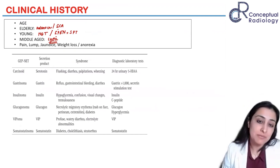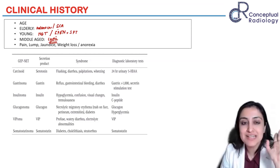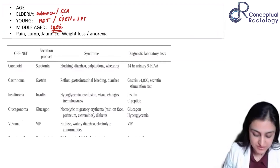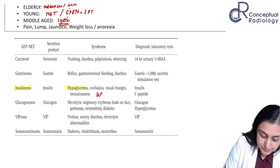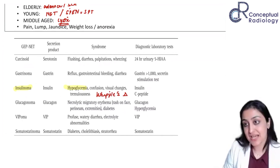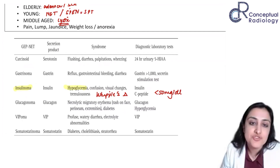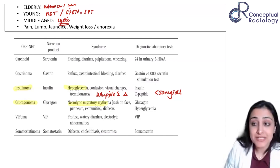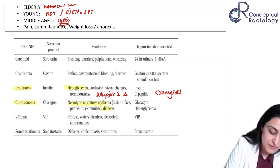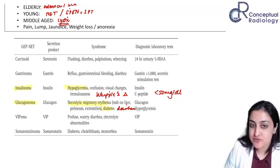Neuroendocrine tumors can be non-functional or functional. Non-functional tumors present the same way when they grow larger — pain and lump. But functional entities are picked up when very tiny, even one centimeter. The most common functional type is insulinoma, causing hypoglycemia — remember the Whipple's triad: symptoms of hypoglycemia, glucose less than 50 mg/dL, and resolution with glucose. Glucagonoma presents with the four Ds: dermatitis (necrolytic migratory erythema), diabetes, and diarrhea.